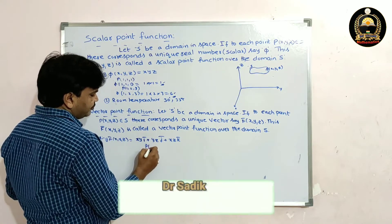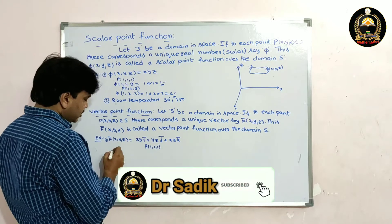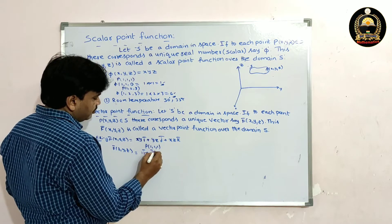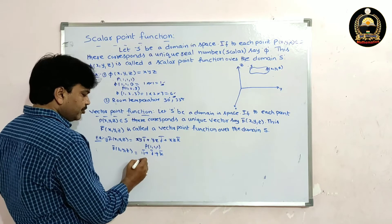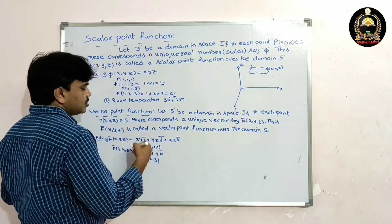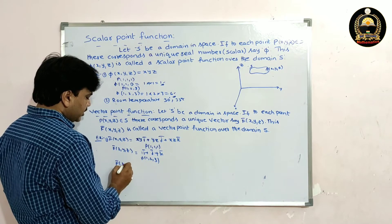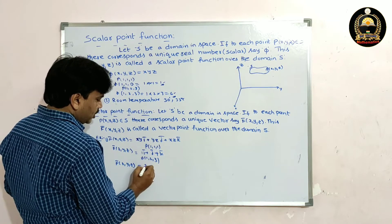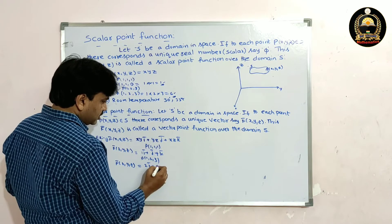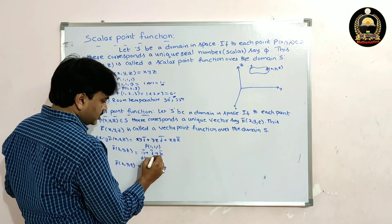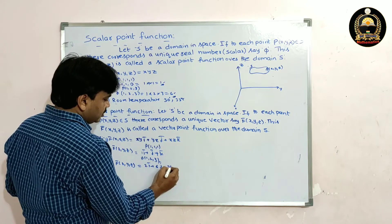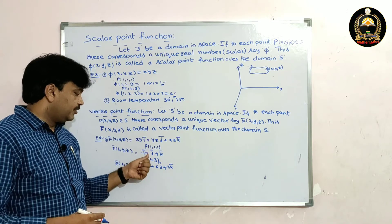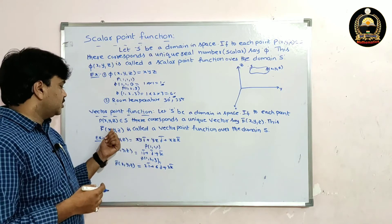If we take the point P = (1, 1, 1), then F̄ = 1î + 1ĵ + 1k̂. Similarly, taking point (1, 2, 3): F̄ = xy î + yz ĵ + xz k̂ = (1×2)î + (2×3)ĵ + (3×1)k̂ = 2î + 6ĵ + 3k̂. To each point there corresponds a unique vector.